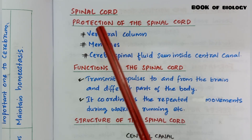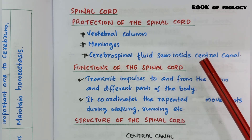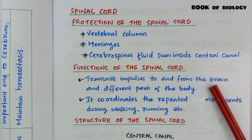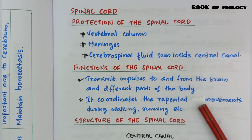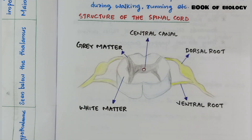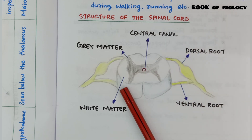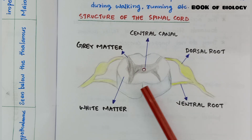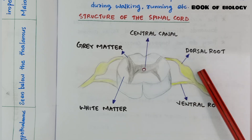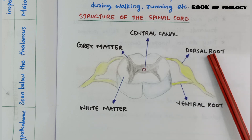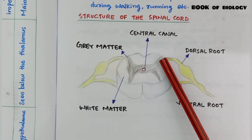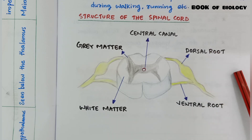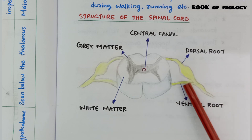Next organ: spinal cord. Protection of the spinal cord: vertebral column, meninges, and cerebrospinal fluid seen inside the central canal. Functions of the spinal cord: transmit impulses to and from the brain and different parts of the body; coordinates repeated movements during walking, running, etc. Structure: outside is white matter, inside is gray matter, and at the central part there is a central canal. You can see the dorsal root and ventral root — sensory impulses reach the spinal cord through the dorsal root, and motor impulses move out through the ventral root.